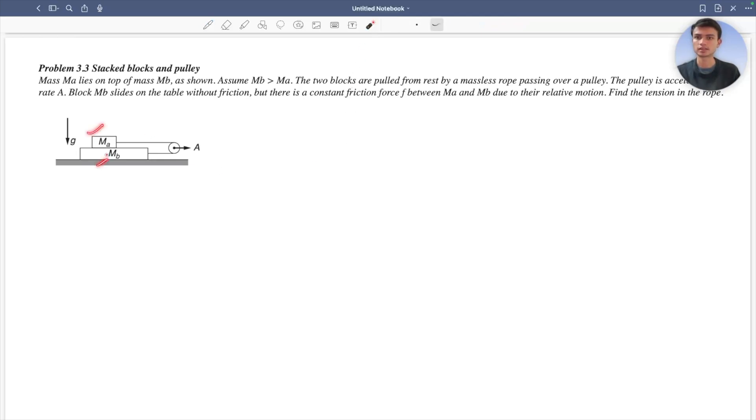I have these two masses ma and mb as shown, and mb is greater than ma. The two blocks are pulled from rest by a massless rope passing over a pulley, and the pulley is accelerating at an acceleration A.